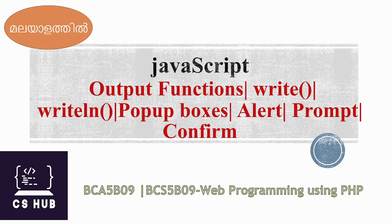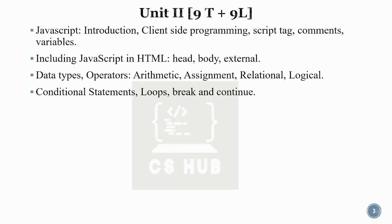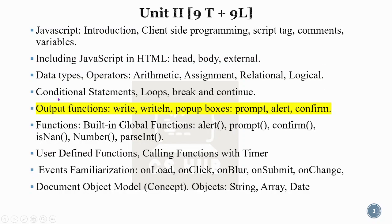Today's topic is web programming using PHP and JavaScript. We are discussing output functions in JavaScript: the write function, document.write, popup boxes like alert, prompt, and confirm. Last class we discussed conditional statements, loops, break and continue, and for-in loops. Now we move on to output functions available in JavaScript.